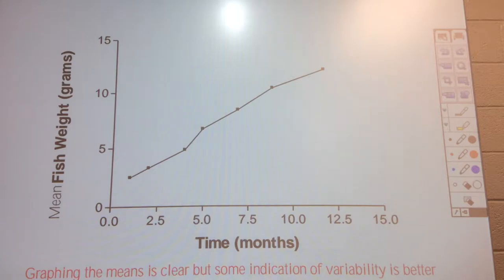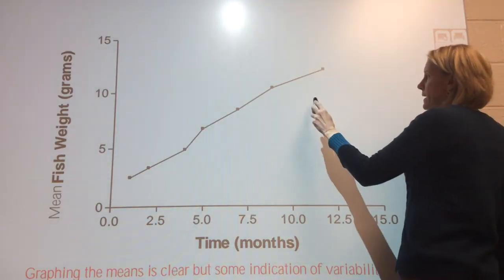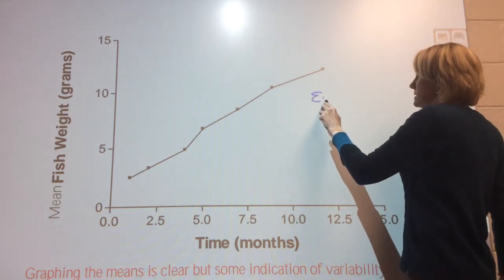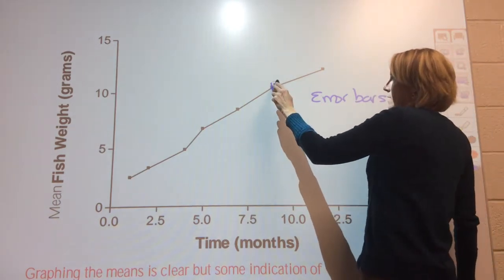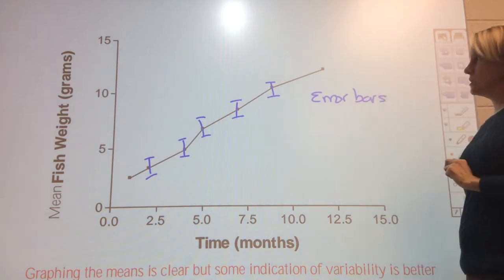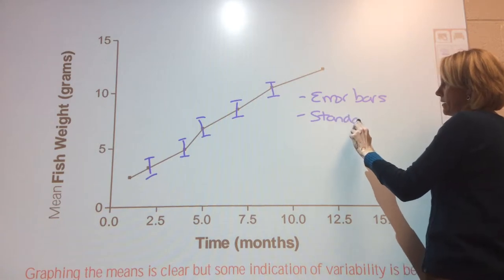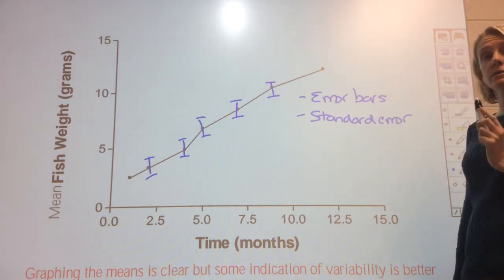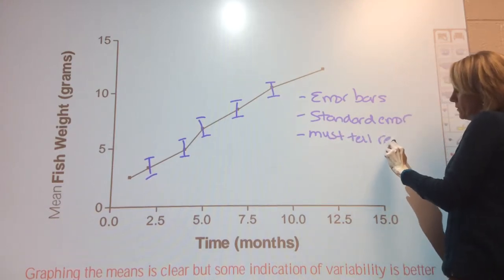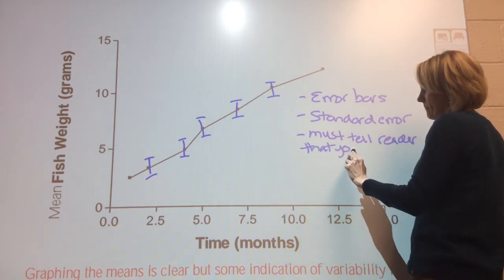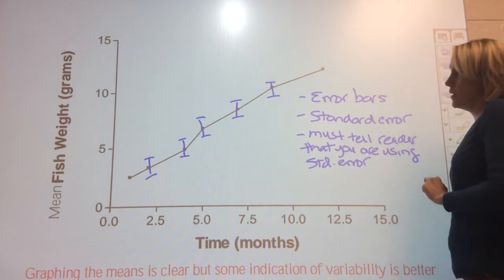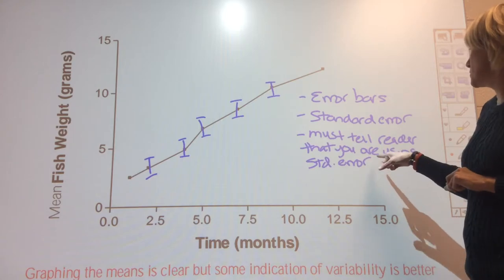Remember from our previous video that averages alone don't give enough information. We want to include information about variability by adding error bars. We're going to use standard error — not standard deviation. When you do this, you must tell the reader you're using standard error, because if they just see error bars they have no idea whether it's standard deviation, standard error, or the range — and those are different things.